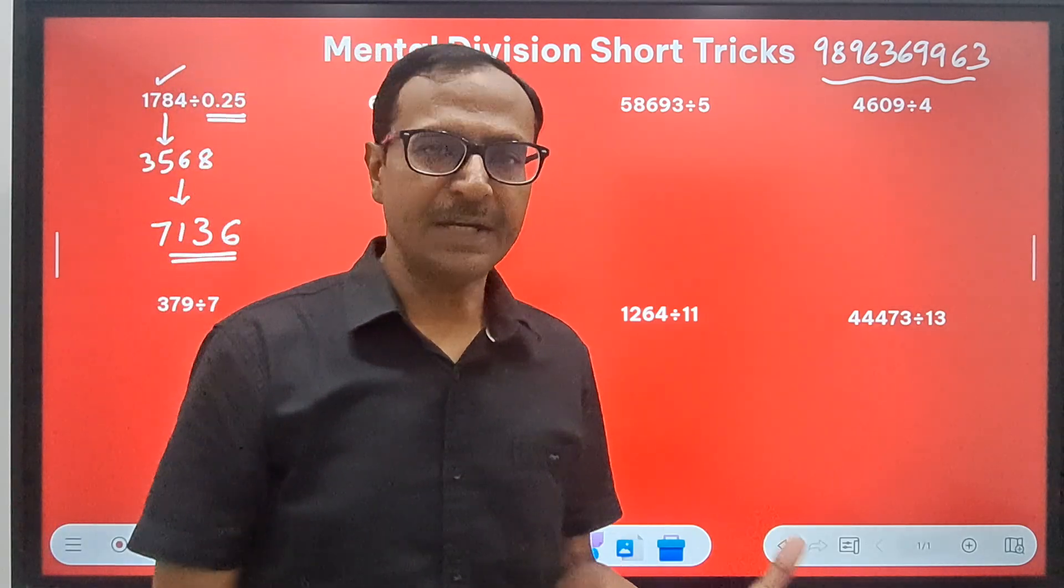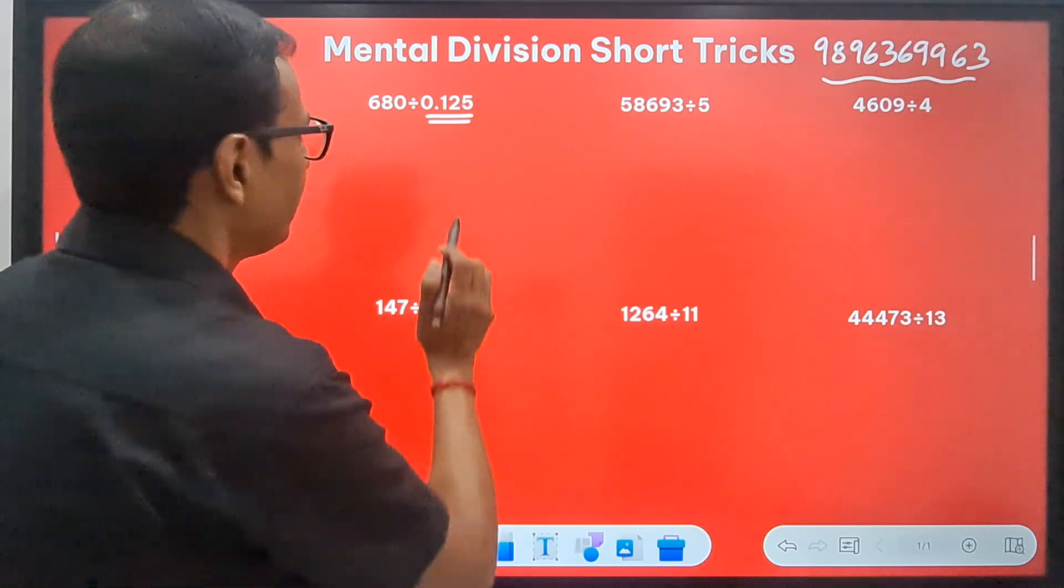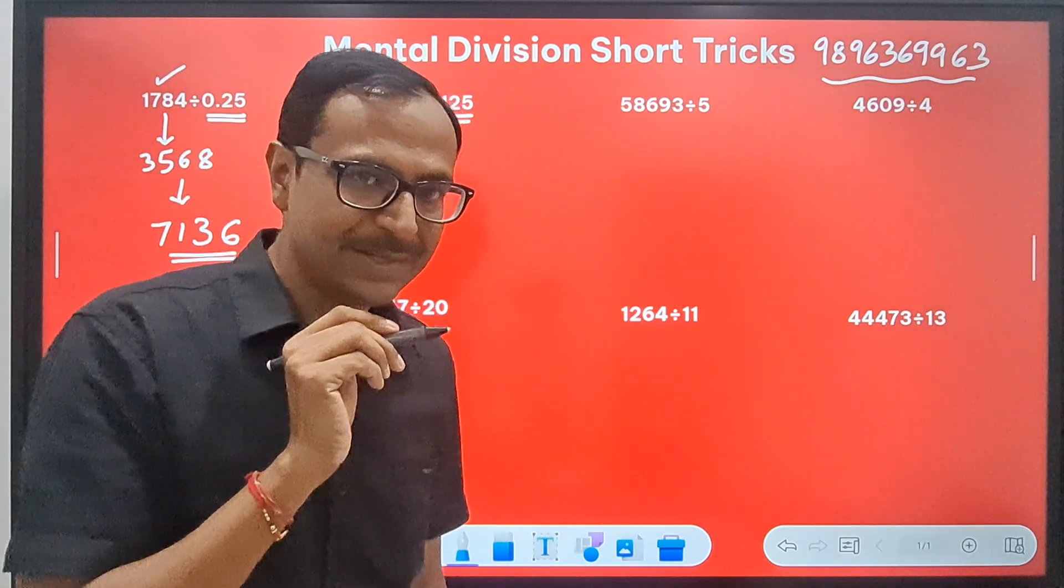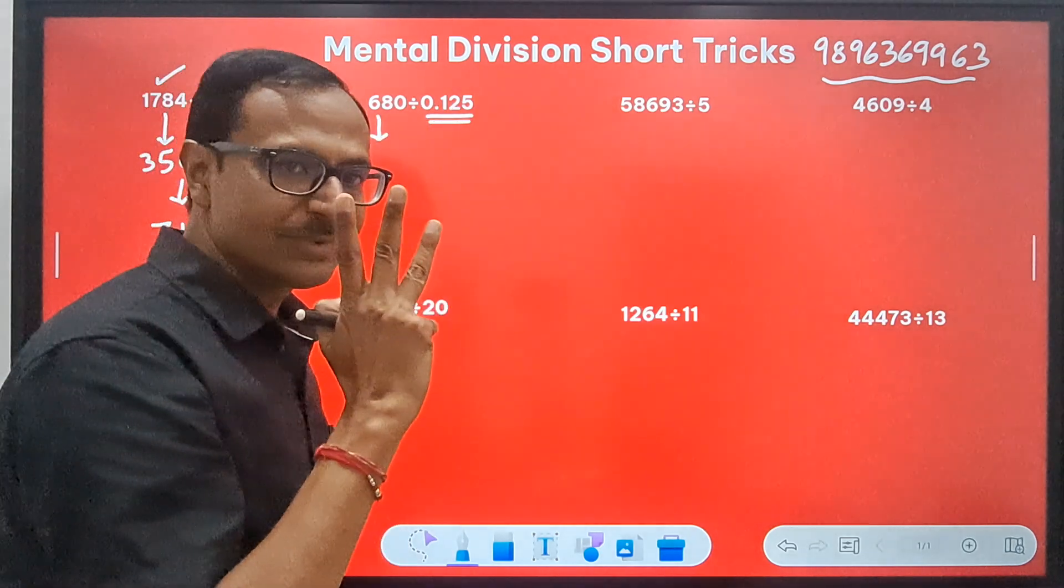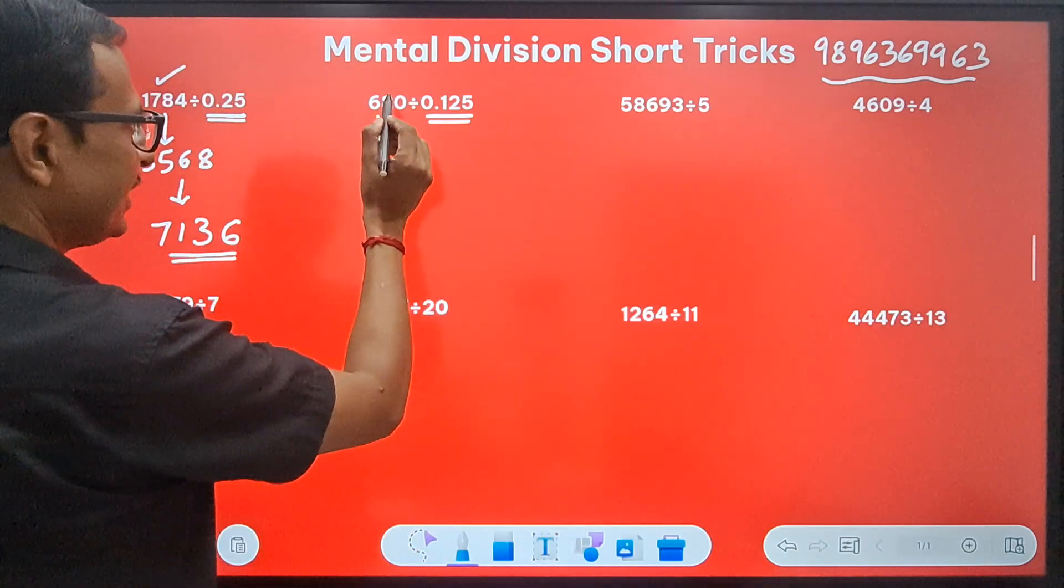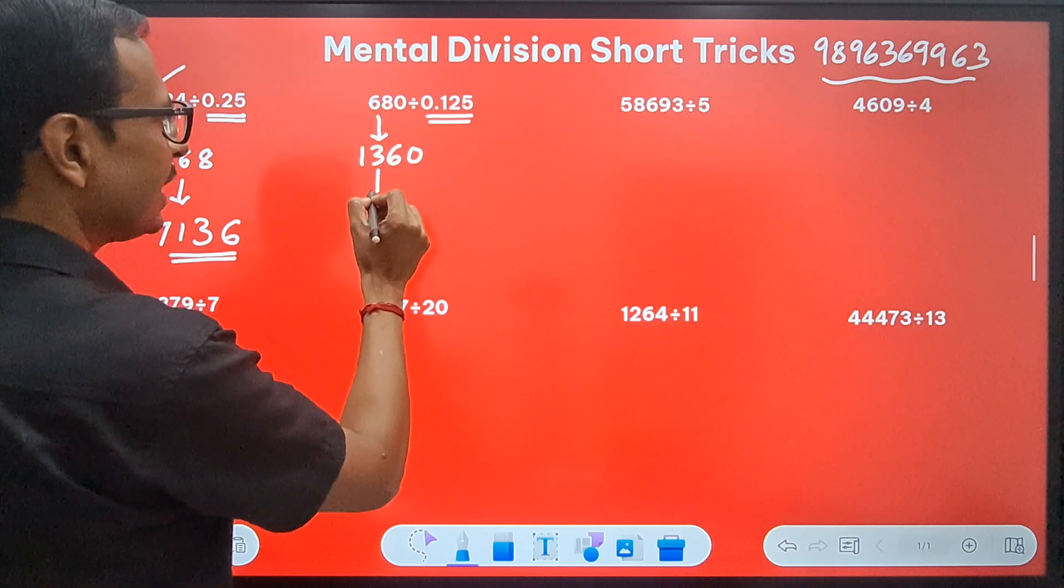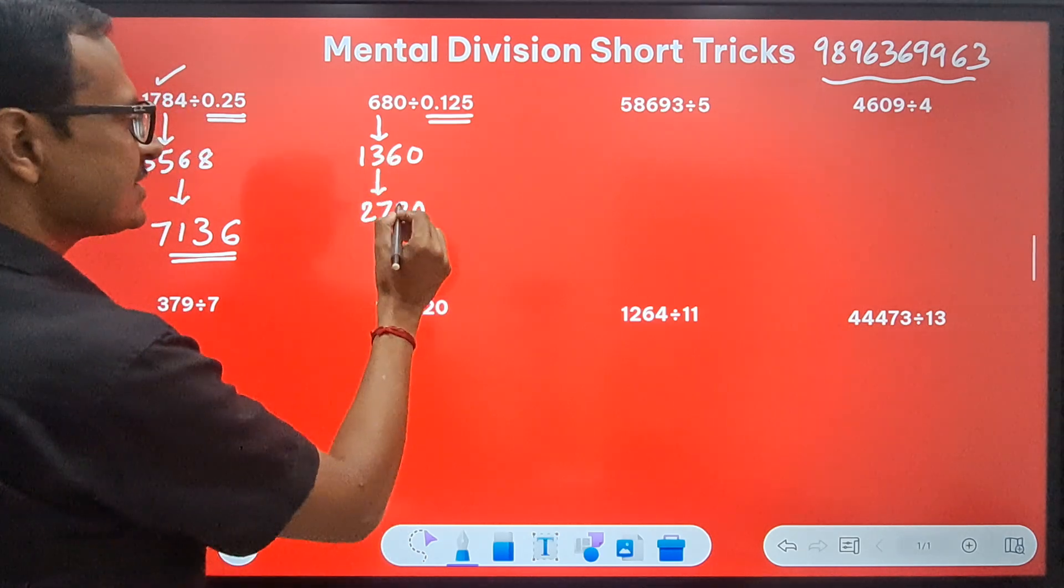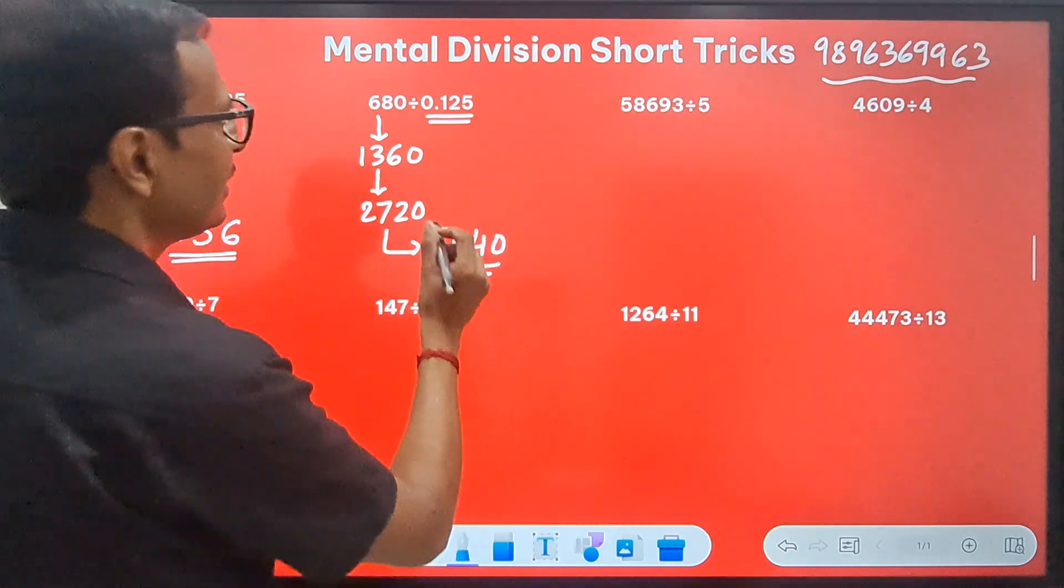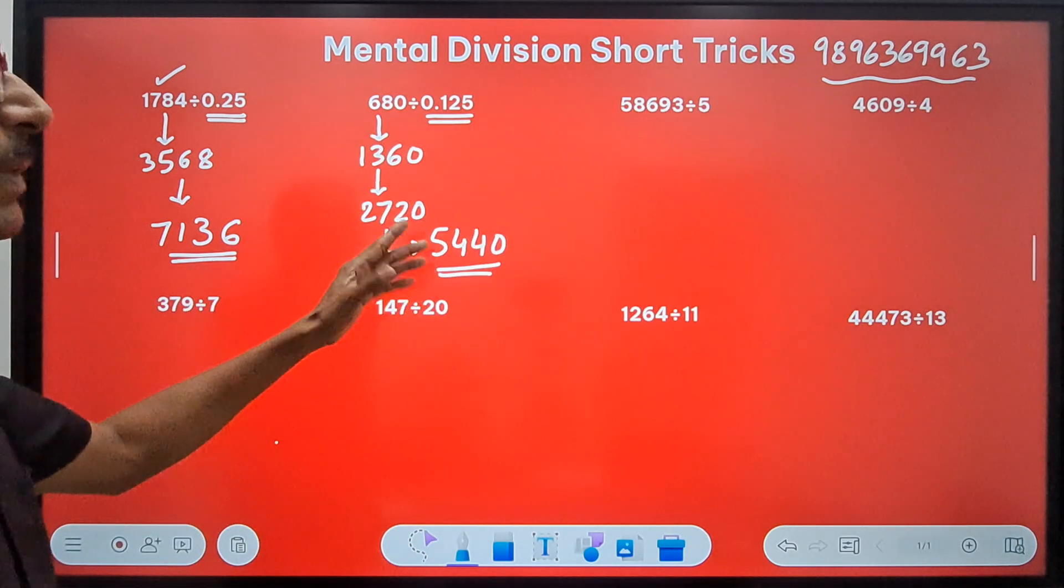Likewise, we can get the answer for division by 0.125. You should know that 0.125 is actually one eighth. When you're dividing by 0.125, that means you're doubling this number three times. The double of 680 is 1360, double again gives 2720, and double once more gives your answer: 5440. Check using calculators—680 divided by 0.125 equals 5440.